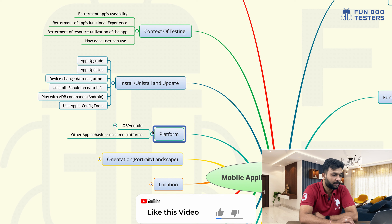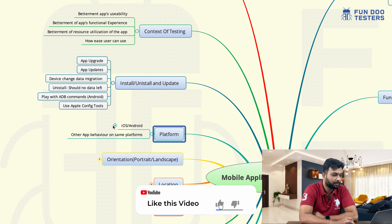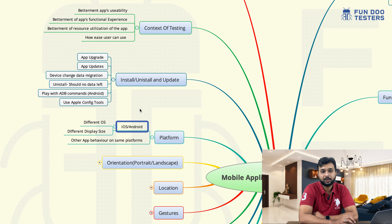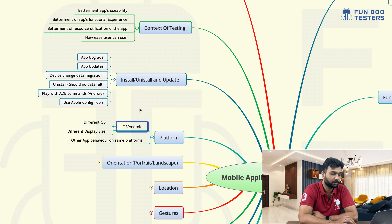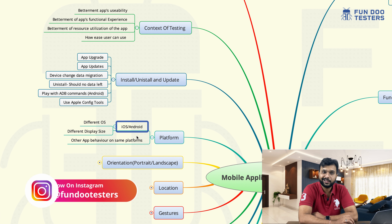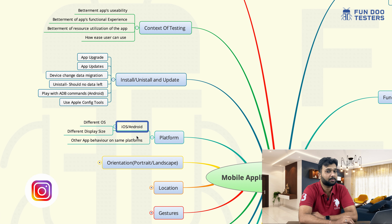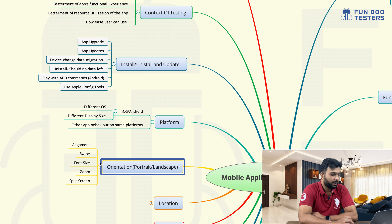Later on, the platform. Platform is a major part. Mostly in Android applications or iOS applications, there are different OS versions, different platforms, and different devices available. We need to check our product on multiple devices. This I have covered in detail in the compatibility testing video — if you don't have any idea how we can test an Android phone on multiple devices, then you can watch that video.